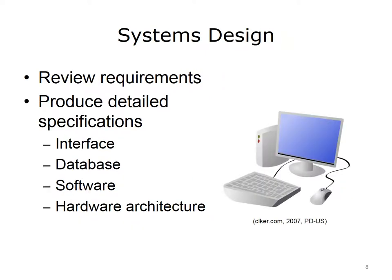The objective of the systems design stage is to determine system specifications that would satisfy all requirements formulated during the previous stage. Systems design starts with a review of the system requirements. Then, different system components are designed. Those include the system interface, its database, software, and hardware architecture. The deliverable of this stage is a blueprint for building the new system.